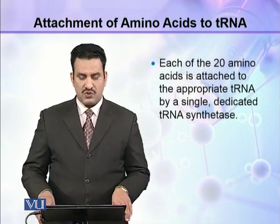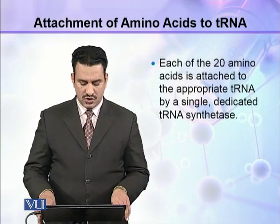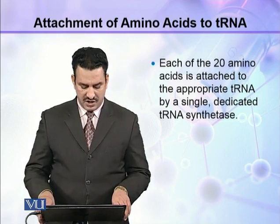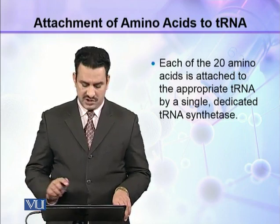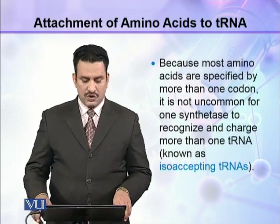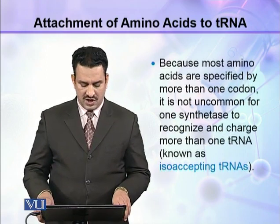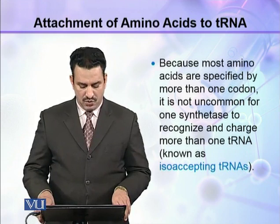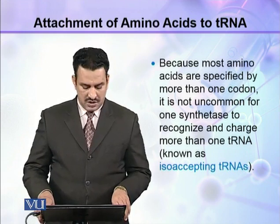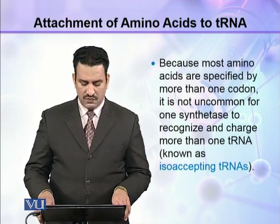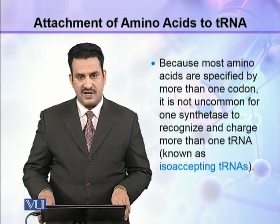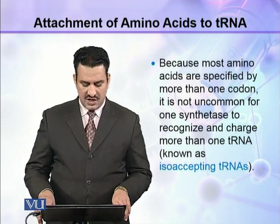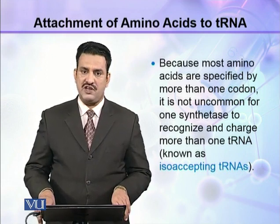Each of the 20 amino acids is attached to the appropriate tRNA by a single dedicated tRNA synthetase. Because most amino acids are specified by more than one codon, it is not uncommon for one synthetase to recognize and charge more than one tRNA, and this is known as isoaccepting tRNAs.